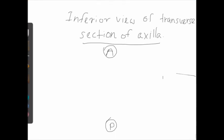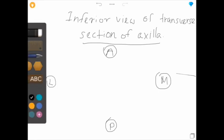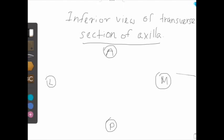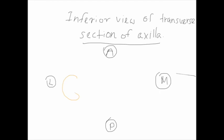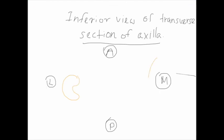This is anterior and this is posterior, medial and the lateral aspect of the axilla. In this diagram you can't see all structures of the axillary wall, but I will mention all the structures. Laterally, I have drawn the upper part of the humerus with the intertubercular groove.